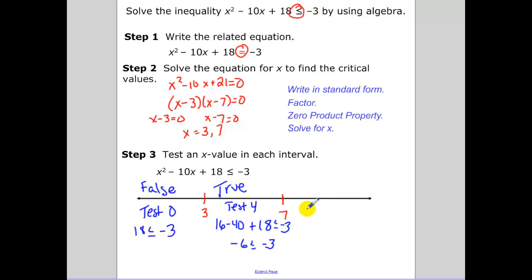Then pick a number greater than 7. I'm going to test 8. So we have 64 minus 80 plus 18 less than or equal to negative 3. We get 2 less than or equal to negative 3. Well, that's never going to happen, so that's false.